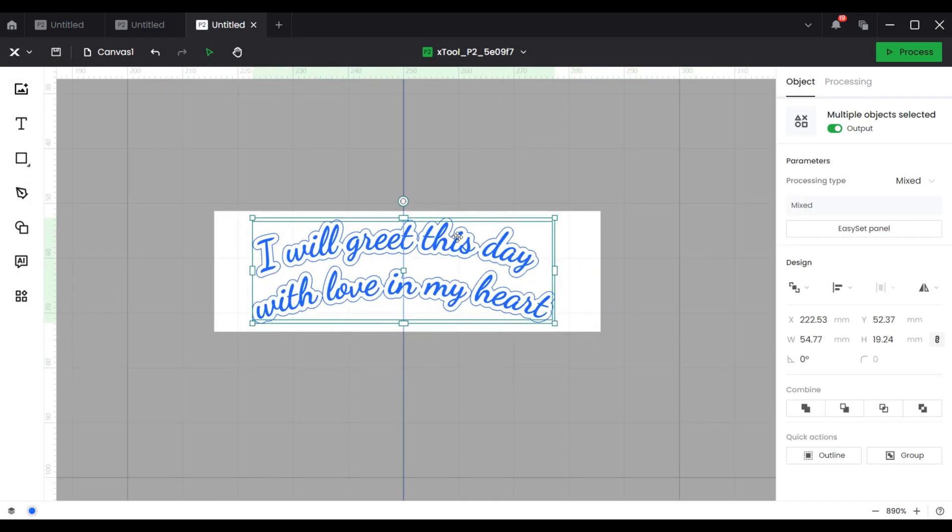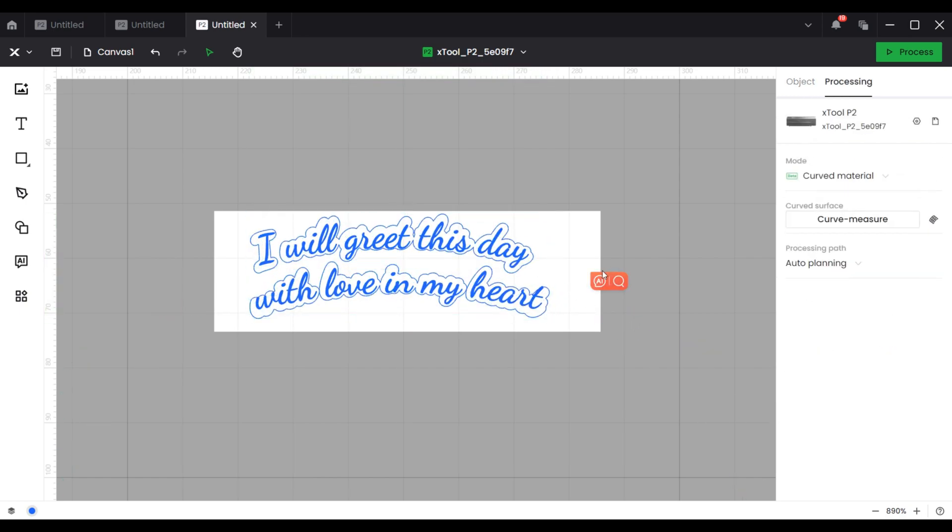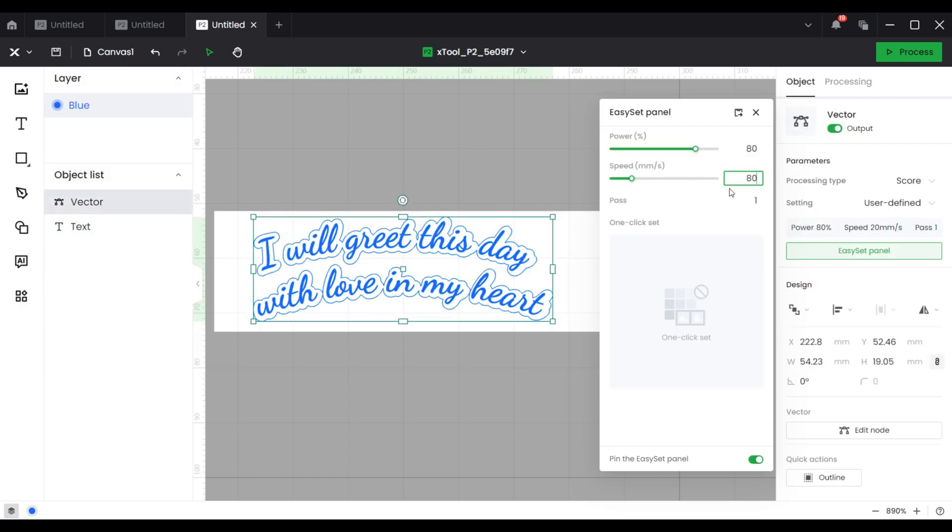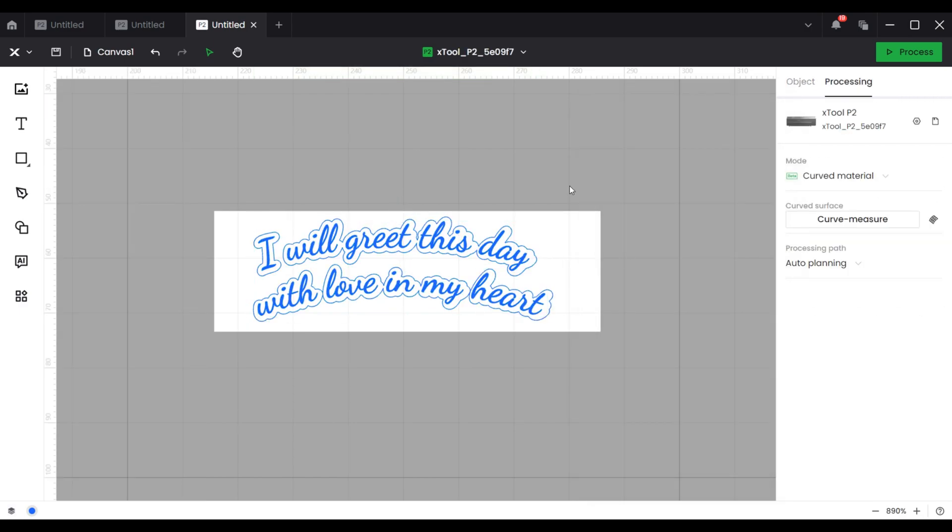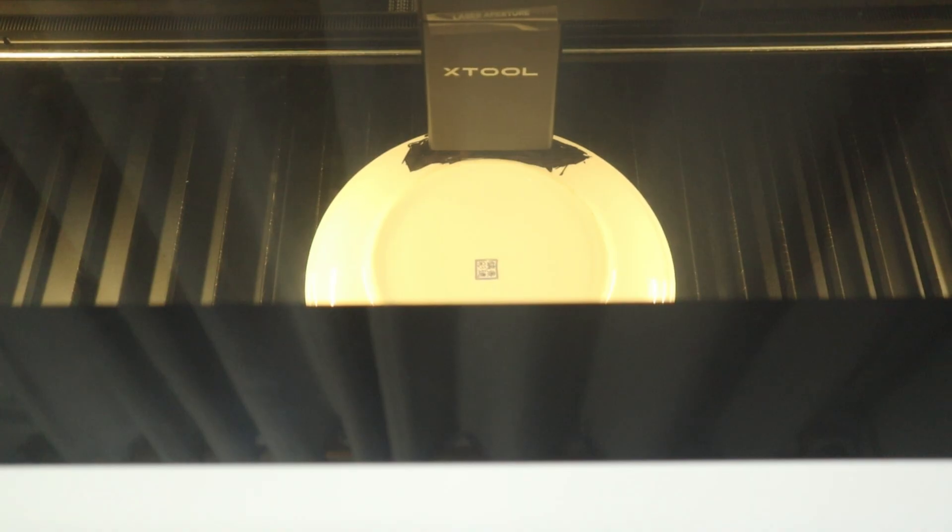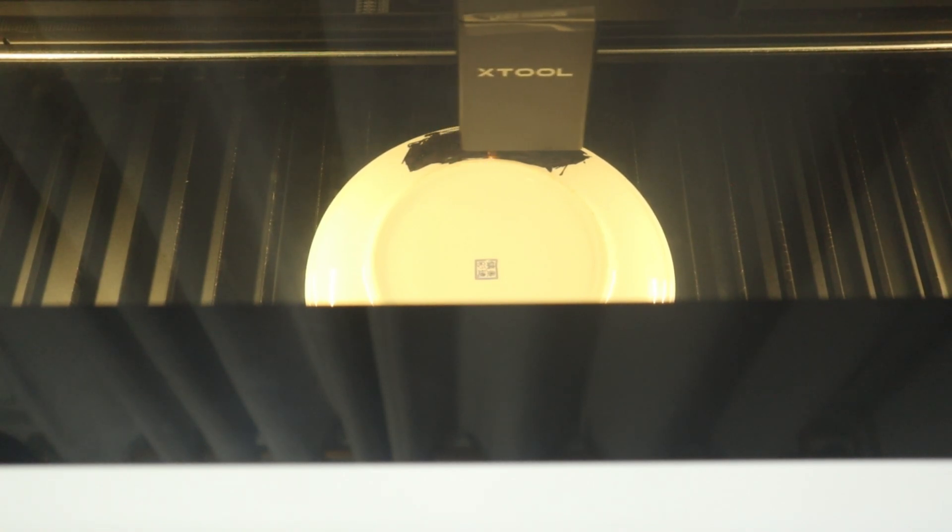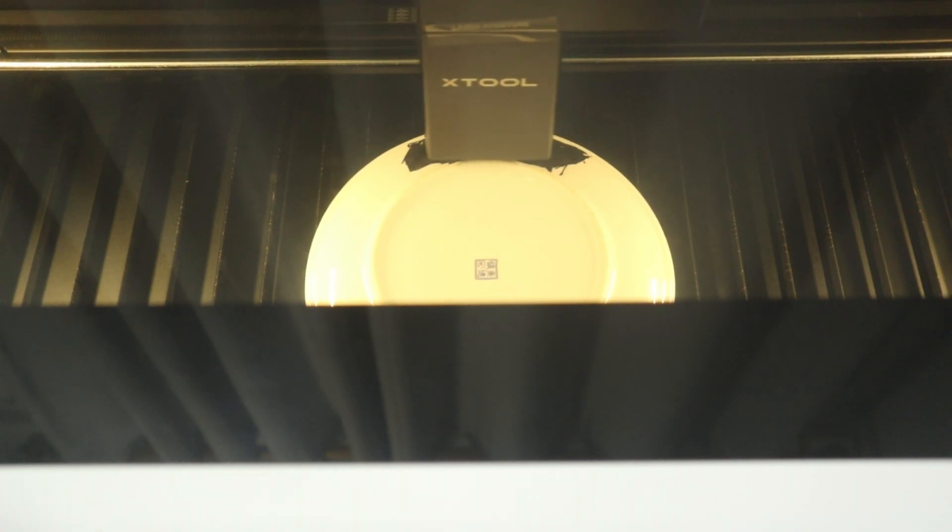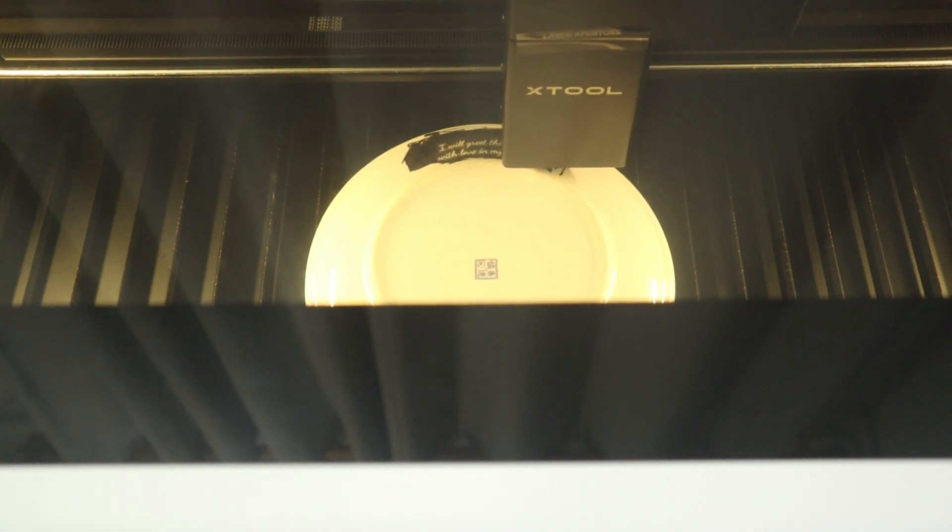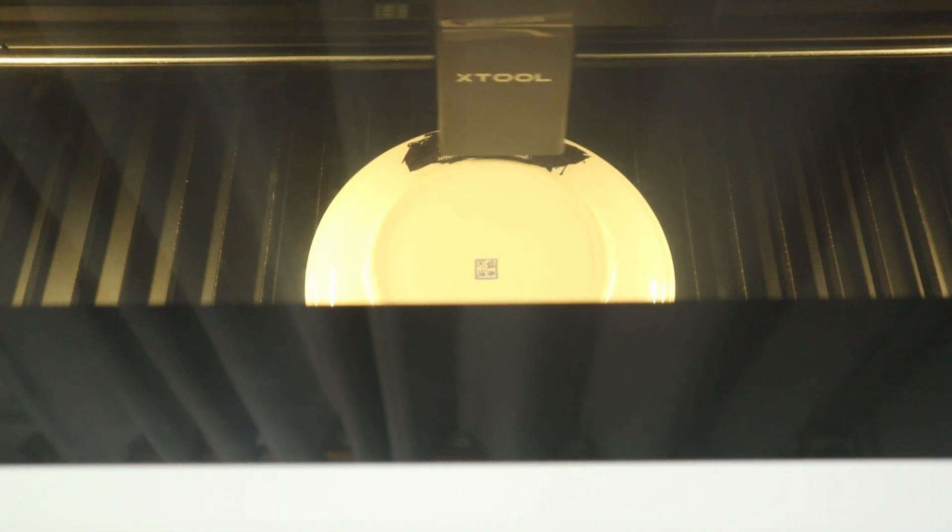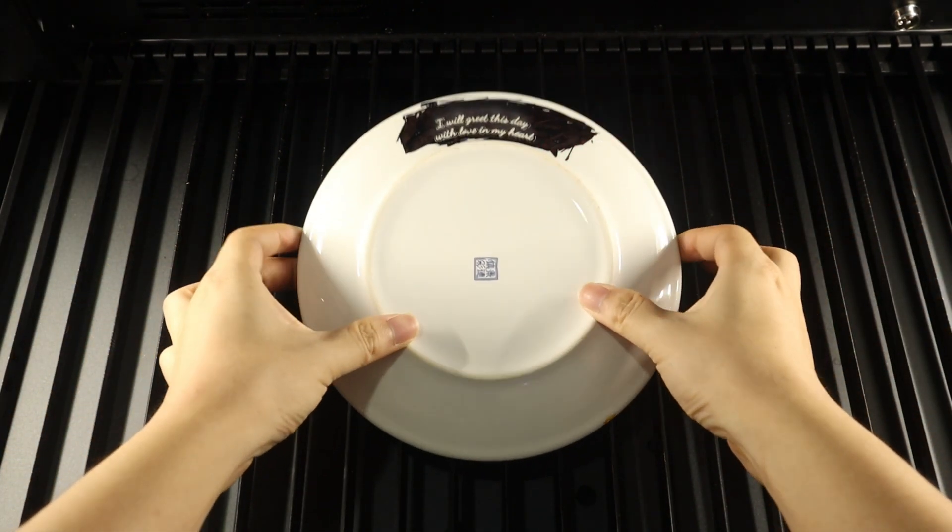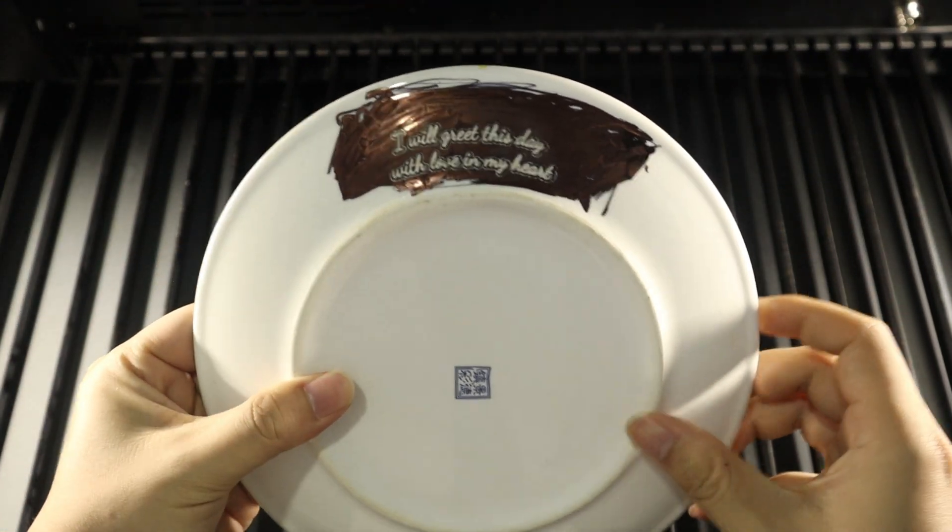Finally, the software interface will display the preset rectangle engraving area, and we just need to place the pattern within the rectangle, and set the engraving parameters. Then, start to engrave.